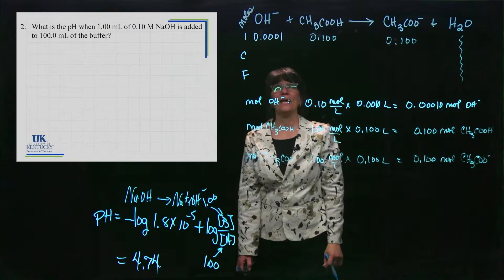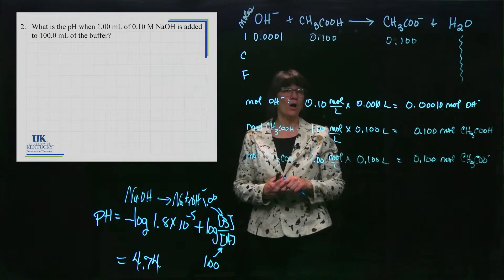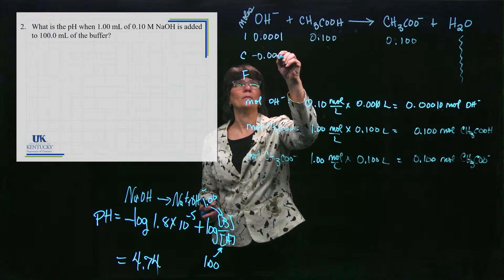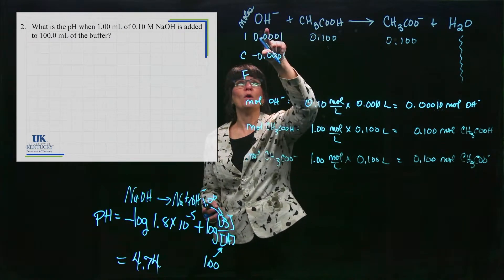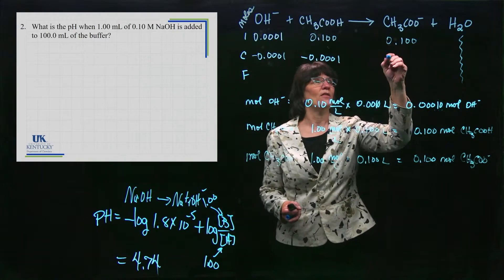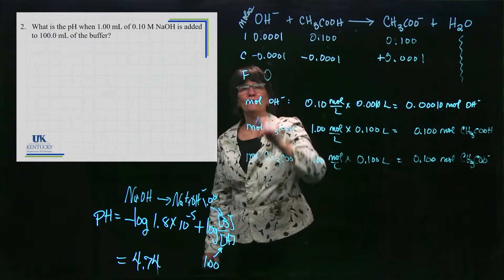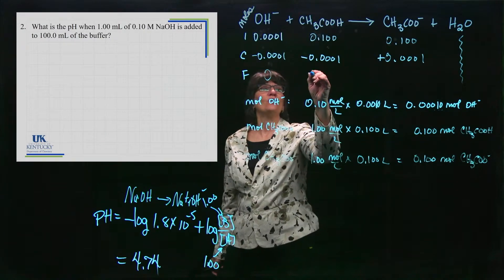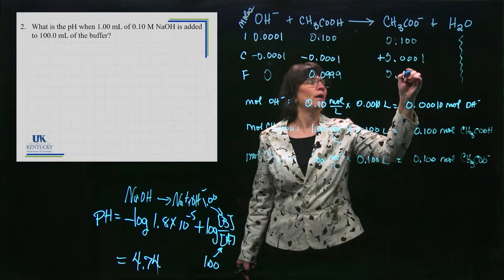I put 0.1 in for acetic acid and 0.1 for acetate — because it's a buffer, both are present. I don't care about water. Here is how the ICF table works: the reaction goes until it uses up the smallest reactant. The OH⁻ (0.0001 mol) is smallest, so I consume all of it. For every OH⁻ that reacts, one acetic acid is consumed, so I subtract 0.0001 from acetic acid, giving 0.0999. And one acetate is produced, so it becomes 0.1001. All the added base is neutralized — the buffer resists change to pH.